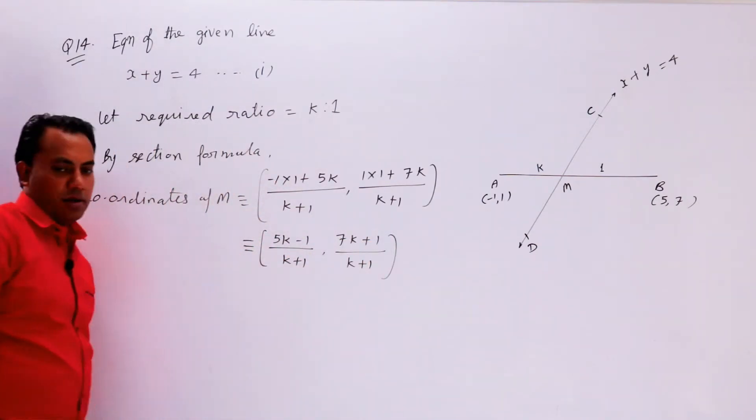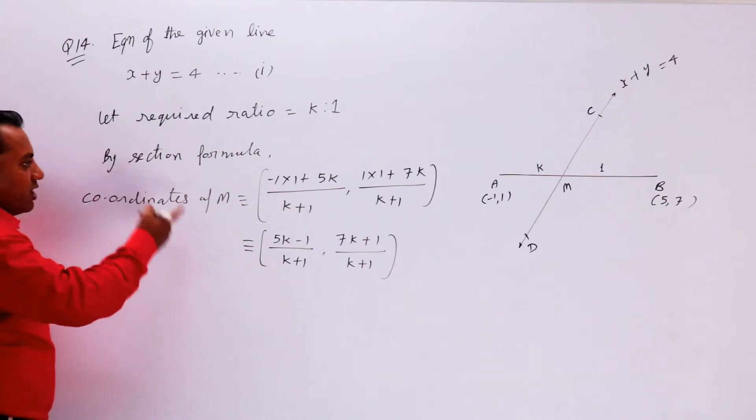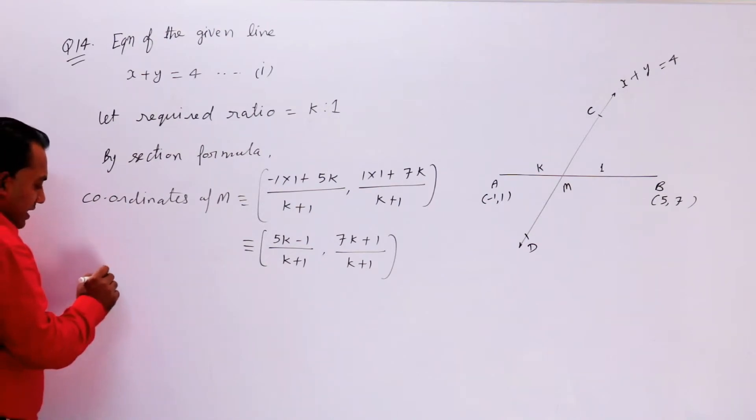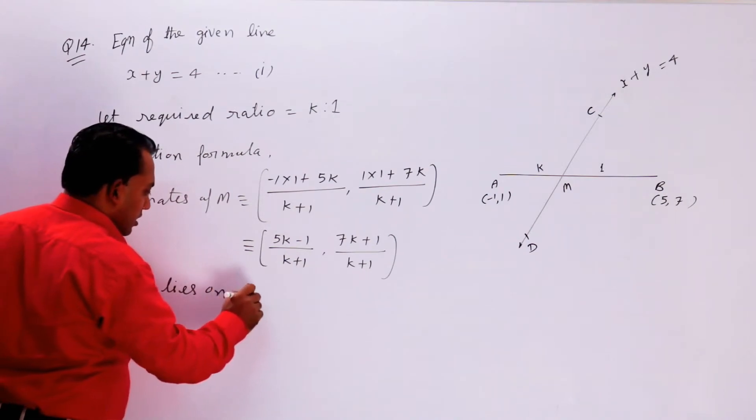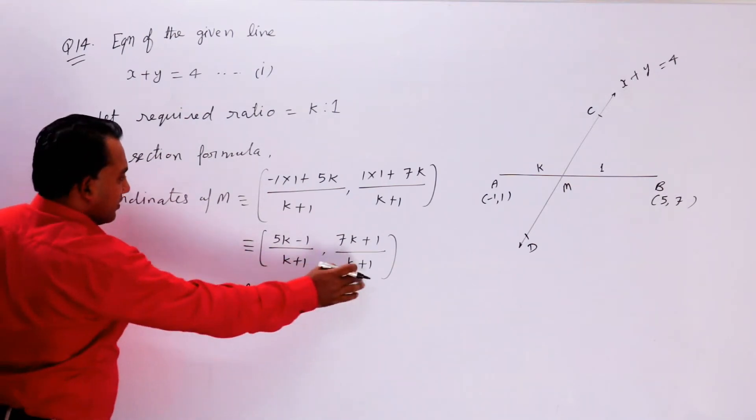Since point M lies on line 1, it must satisfy the equation x + y = 4.